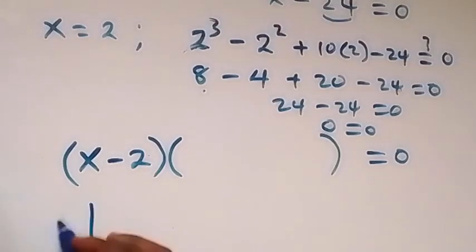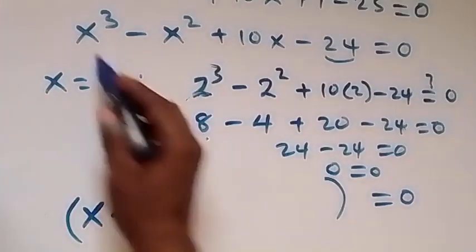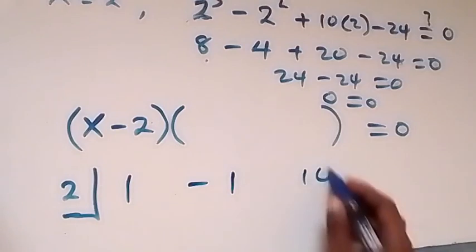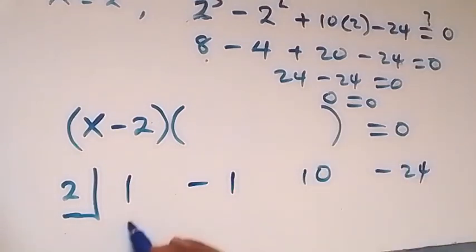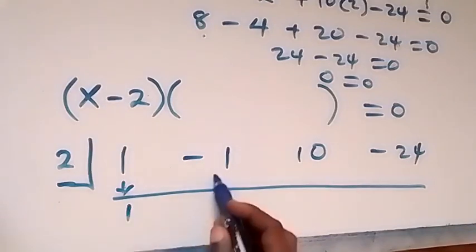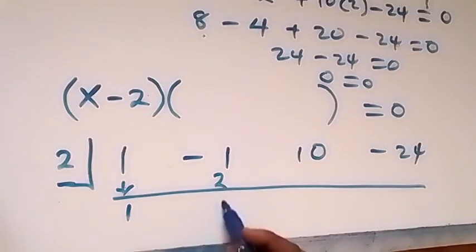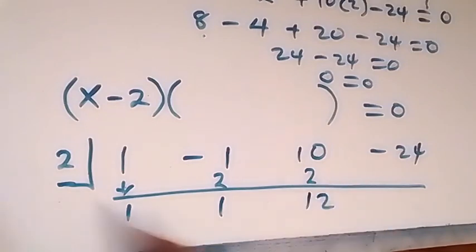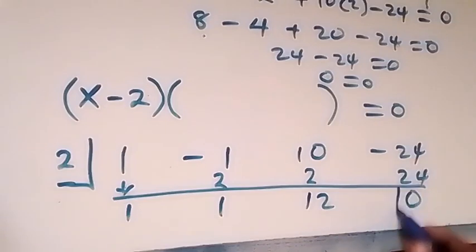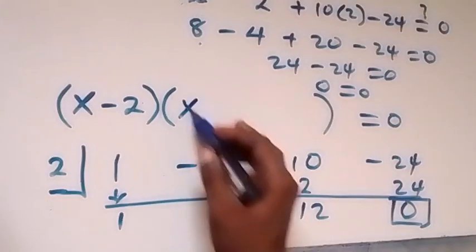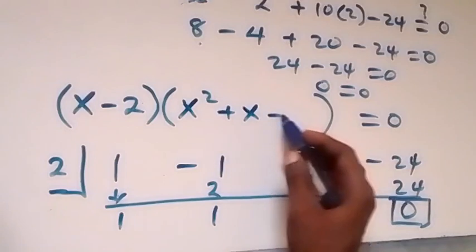We write 2 here. The coefficients of this polynomial are 1, minus 1, 10, minus 24. We bring down the first coefficient: 1. Then 1 times 2 gives us 2. The sum of minus 1 plus 2 is 1. Then 2 times 1 is 2, and the sum gives 12. Then 2 times 12 is 24, and the sum is 0 — the remainder is 0, confirming that 2 is a root.